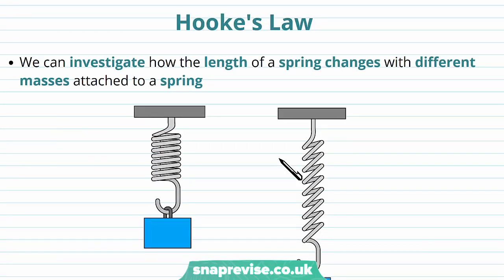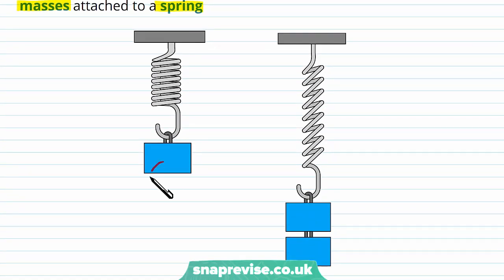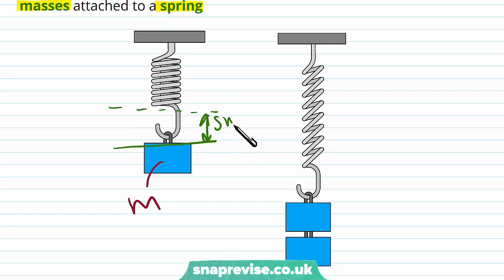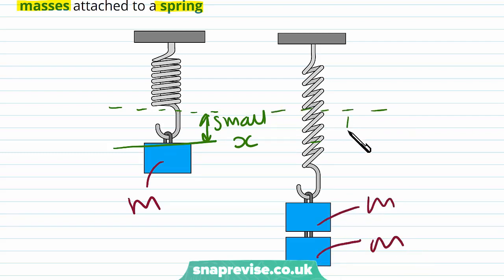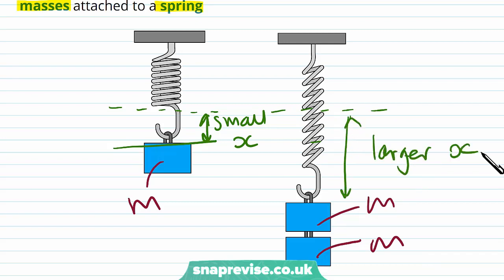Now that we've seen how we can vary the length of a spring using compressive or tensile forces, we're going to look at Hooke's Law, which relates the force applied to a spring to its extension. We can investigate this by applying different masses: one mass gives a small extension, while two masses give a much larger extension — so increasing the mass increases the extension.